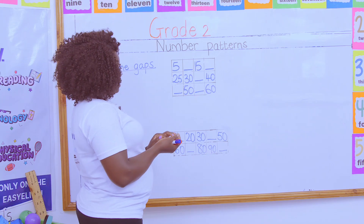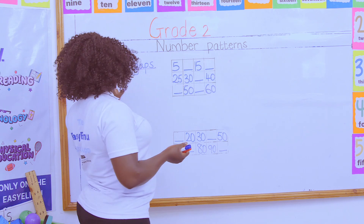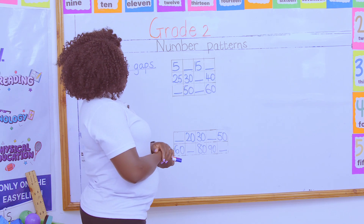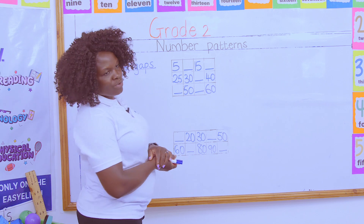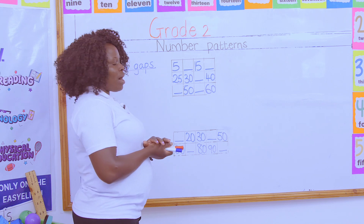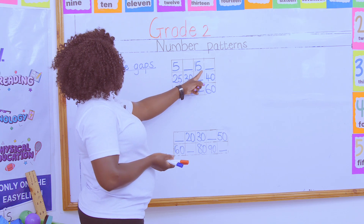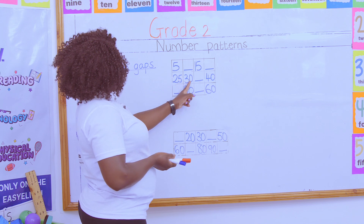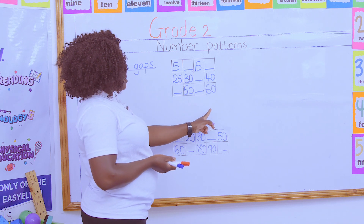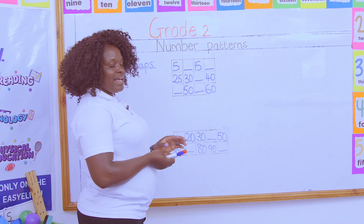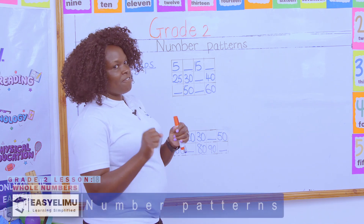Now, when you look at this, what can you say about this? They have told us to fill in the gaps. What is this gap that you are filling in, and how do we know how you are supposed to fill in that gap? When you look at these numbers, what is so common about these numbers? Teacher, they either have a zero or a five. A zero or a five — so what does it tell us? The numbers mean we are counting in fives.